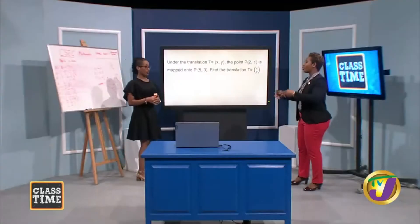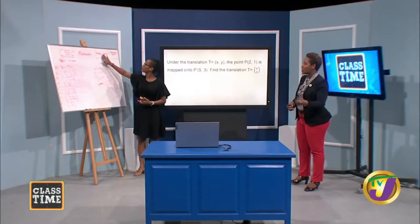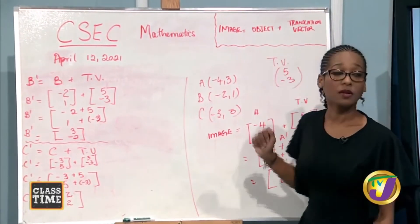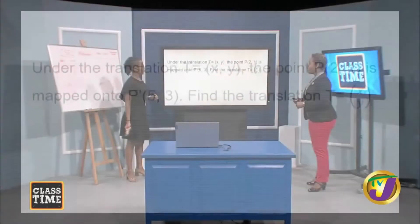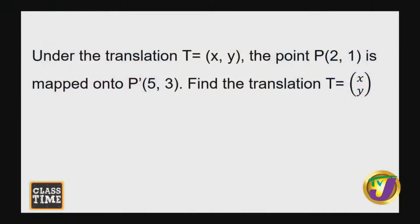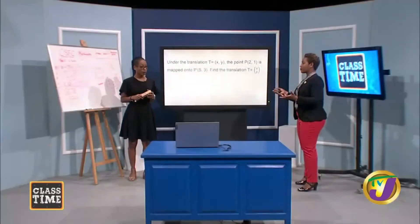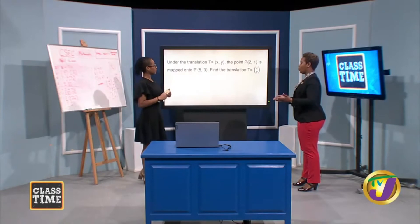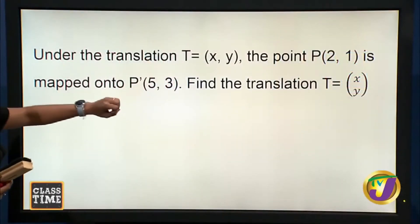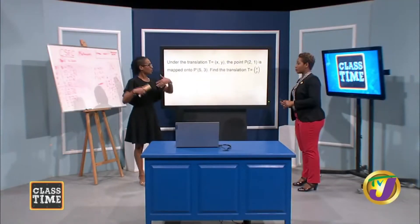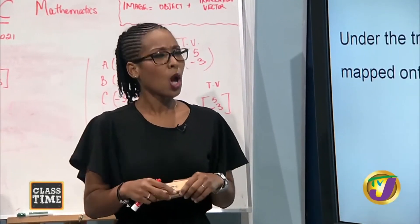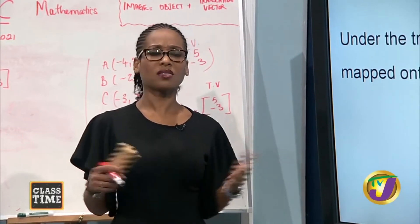If you're not given a Cartesian plane and you need to use coordinates to find either the image or the object, you can manipulate the statement: image equals object plus translation vector. Under the translation T equals X, Y, the point P at 2, 1 is mapped onto P prime at 5, 3. Find the translation vector. We're giving them 30 seconds — the point given is the object and they're also given the image.